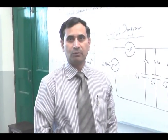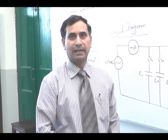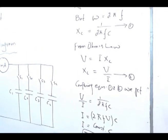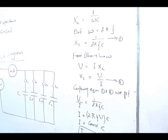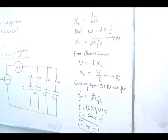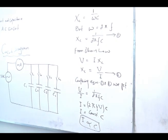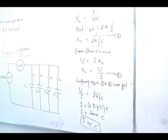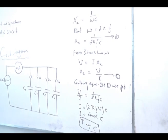Now we will find the relation between capacitance and current passing through the circuit. We know the reactance of the capacitor XC is equal to 1 over ωC, where ω is the angular frequency and C is the capacitance. Since ω equals 2πF, putting this value gives XC equal to 1 over 2πFC, where F is the frequency of the AC supply.